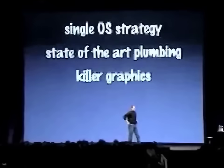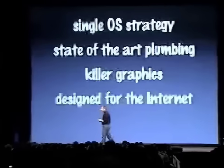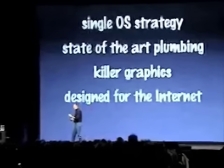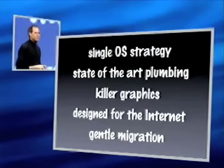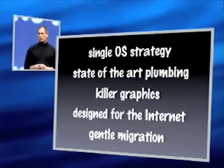Third, we need killer graphics. Almost every app depends on graphics, whether it's design and publishing apps for our pro customers, down to things that we use every day. We need killer graphics in this system. And we need to design it for the internet from the start, in a way that most users who are always plugged in get full benefits, using internet standards throughout. And we need a gentle migration because we have 25 million users on our current generation operating systems. So these were the goals — to make the next great personal computer operating system.